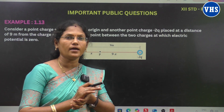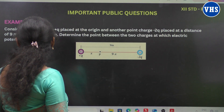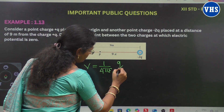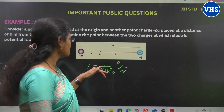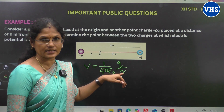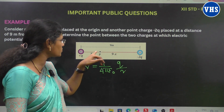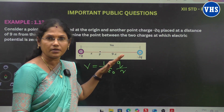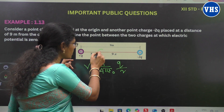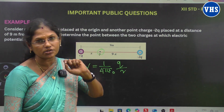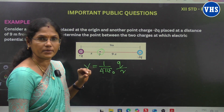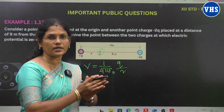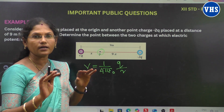You know very well: V is equal to K Q by R. The full form is V = 1 by 4 pi epsilon naught × Q by R. This is the electric potential formula. In this problem, we have one charge plus Q and another charge minus 2Q. The total distance between them is 9 meters. We need to find the point between the two charges where the electric potential equals zero.